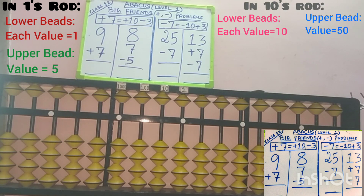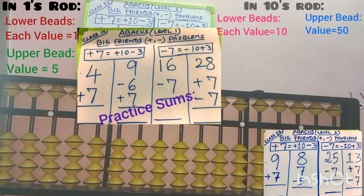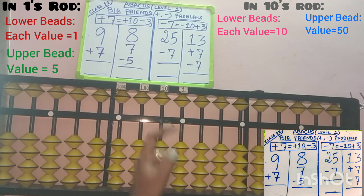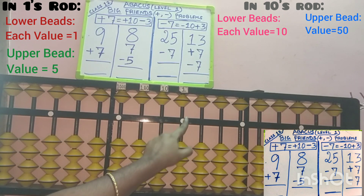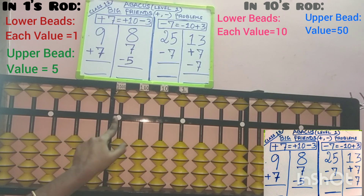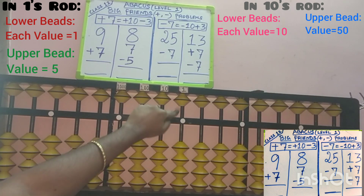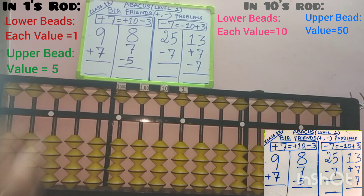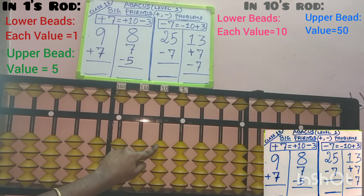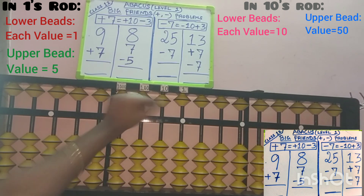Now I am going to solve 4 problems here, and these 4 problems are for your practice. After completing this video, you can try this using Abacus. From 5 points, the middle point is the 1s slot, then 10s, 100s, 1000s, etc. In the 1s slot, bead values are 1, 2, 3, 4, and the upper bead value is 5. In the 10s slot, values are 10, 20, 30, 40, and the upper bead value is 50.